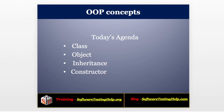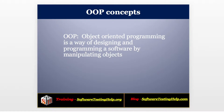Okay, what is object oriented programming? Object oriented programming is a way of designing and programming a software by manipulating objects. So in object oriented programming, object is a main part of the whole programming.